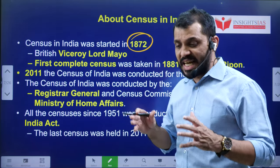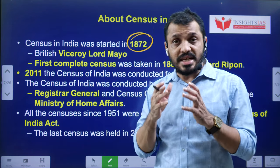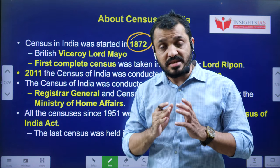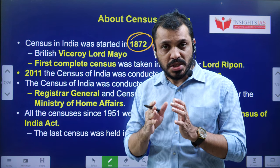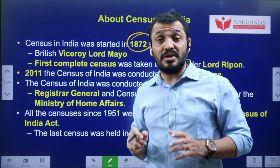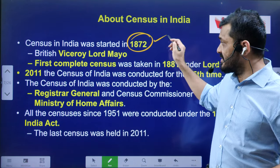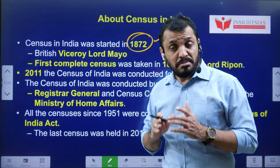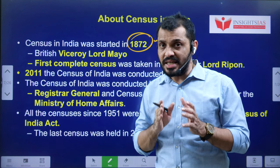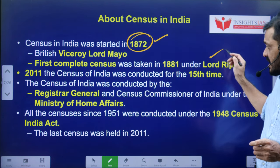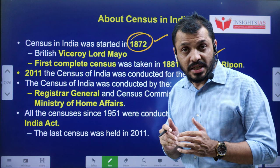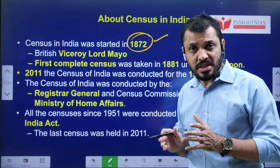First we will try to understand what is the census and the difference between census and survey. Census is nothing but systematic calculation of certain parameters related to population. This kind of exercise was first tried in 1872, when the Viceroy was Lord Mayo. Since 1881, we have been systematically conducting the census every 10 years. The last time it was conducted was in 2011 — it was the 15th time. In 2021, the Government of India did not conduct it because of the COVID pandemic.